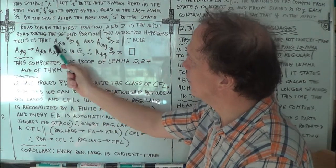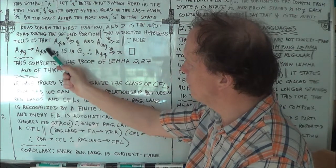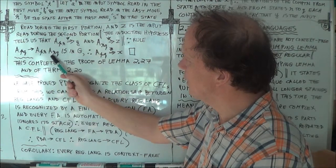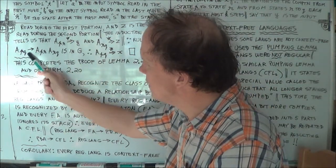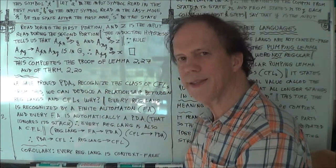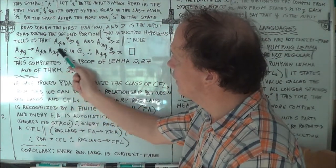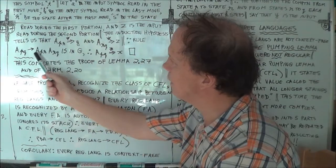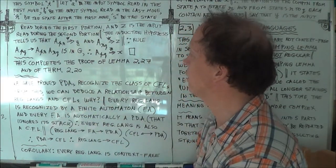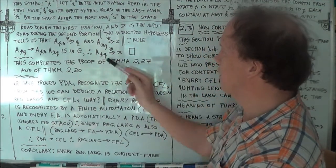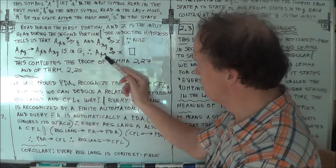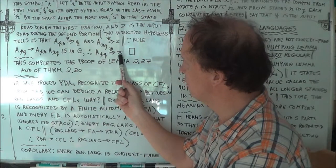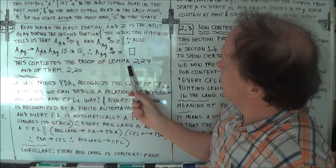If from this variable you can derive Y and from this variable you can derive Z, you'll end up getting YZ. That means that this, which takes k plus one steps to do, can derive the string YZ, which is X, in k plus one steps. So you proved it. End of proof sign here. You proved it: from this variable, in k plus one steps you can derive the string X, completing the proof of the second part and hence the whole theorem.